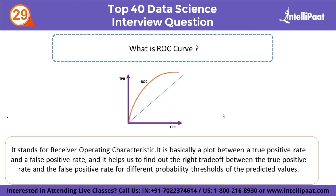What is ROC curve? ROC stands for Receiver Operating Characteristic. It is a plot between the true positive rate and the false positive rate. It helps find the right trade-off between the true positive rate and false positive rate for different probability thresholds. If the curve is closer to the upper left corner, the better the model. Whichever curve has greater area under it (AUC) represents the better model.